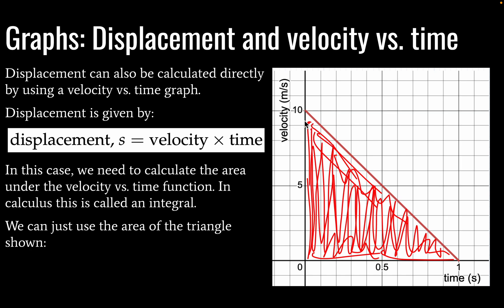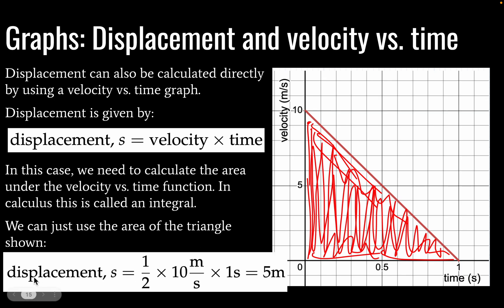So here we need to calculate the area under this velocity versus time function. Okay. So we need the area of a triangle. And we can just use this area. And here's a formula for a triangle. One half height times base. And this is going to give us a displacement of five meters, which we would have seen on our displacement versus time graph as well.